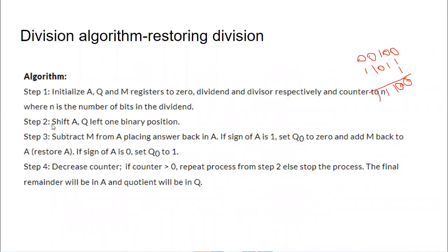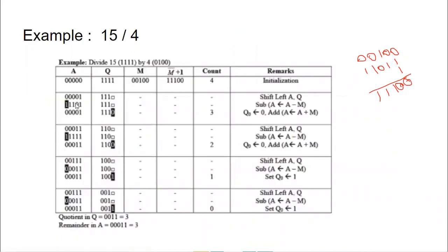From step two, we shift A and Q left one binary position. When we shift left, the MSB of Q moves into A, and the last bit of Q is left as an underscore placeholder. Note that M is not shifted — only A and Q are shifted one position left.